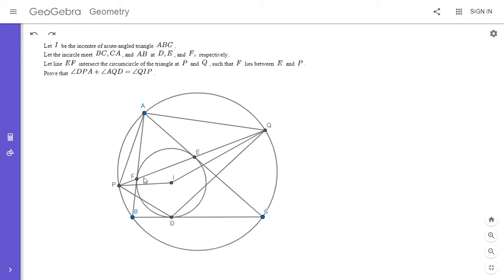So one of the first things I noticed, which I feel like really is a key to kicking off the solution, is that EF is the polar of A with respect to the incircle. So since AE and AF are both tangent to the incircle, EF is the polar. So I mentioned that in video number 75 on my channel, that the line joining the two points of tangency is the polar.